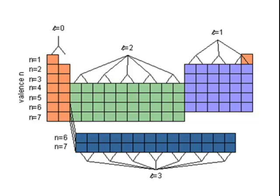When you're going across the second period, the 2s and 2p sublevels are being filled. Remember that 2s can only hold 2 electrons, while 2p can hold up to 6. So the second period on the periodic table will hold a total of 8 elements.